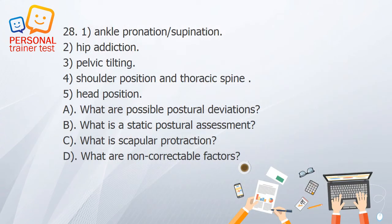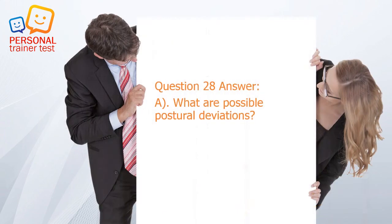Question 28. A. What are possible postural deviations? B. What is a static postural assessment? C. What is scapular protraction? D. What are non-correctable factors? Answer: A. Possible postural deviations include: 1. Ankle pronation/supination; 2. Hip adduction; 3. Pelvic tilting; 4. Shoulder position and thoracic spine; 5. Head position.